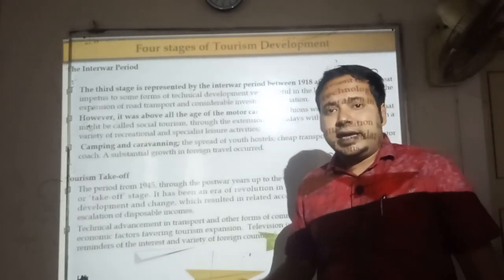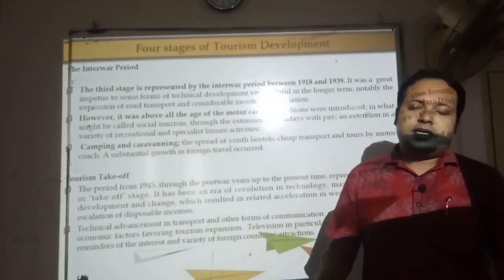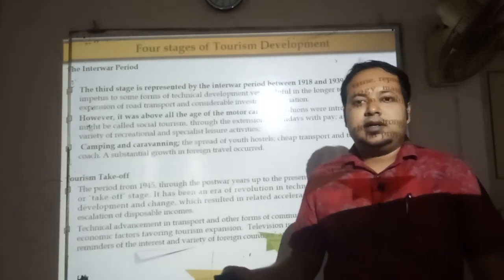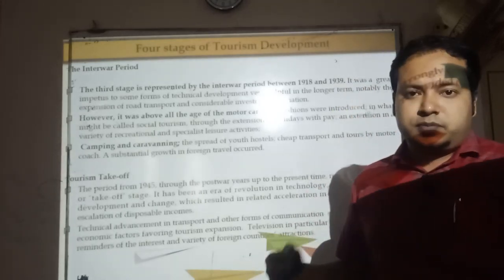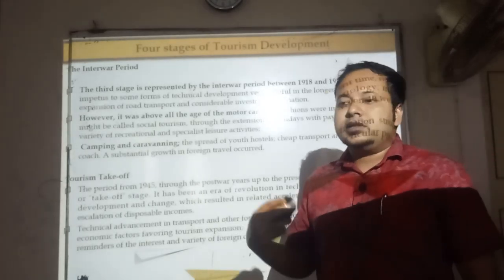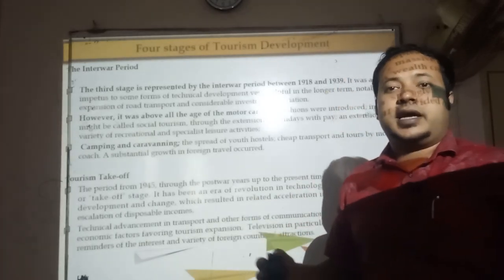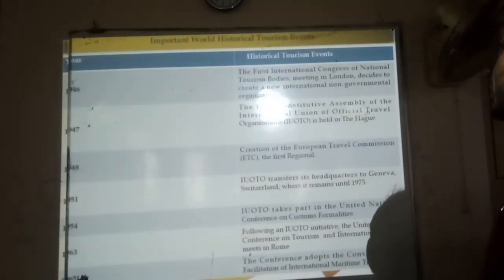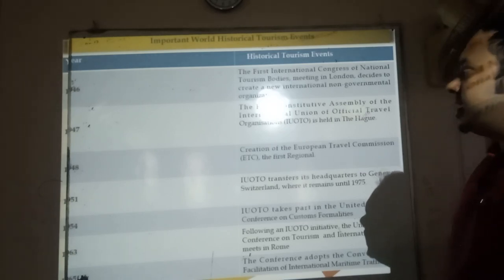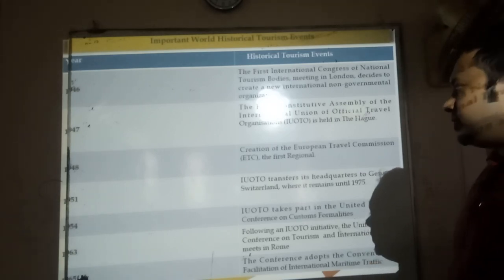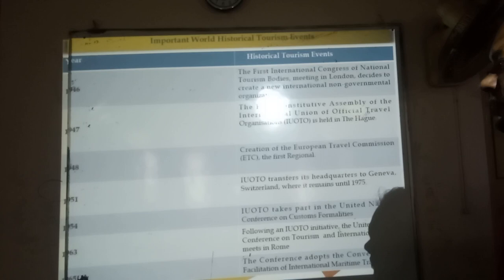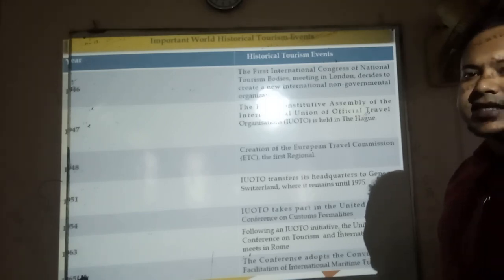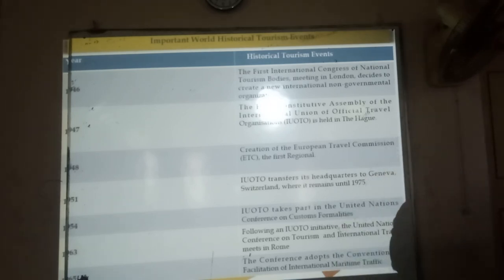Affluent people at that time tried to spend their time for entertainment purposes. Looking at important historical tourism events: 1946, 1947, 1948, 1951, 1954, 1963, and 1965 — this timeline basically shows the key historical tourism events.